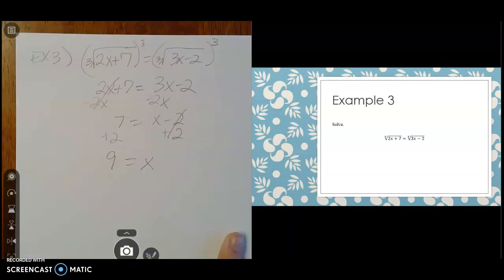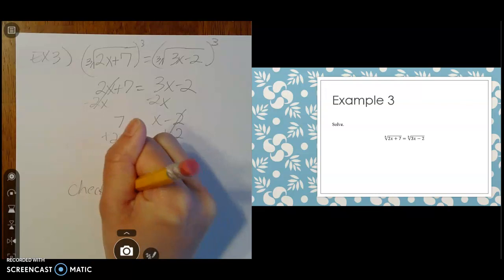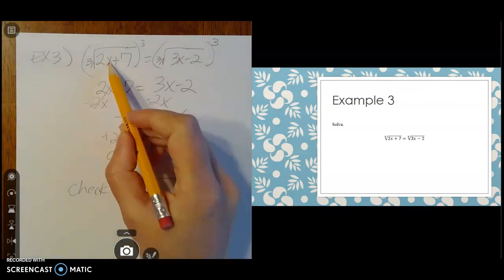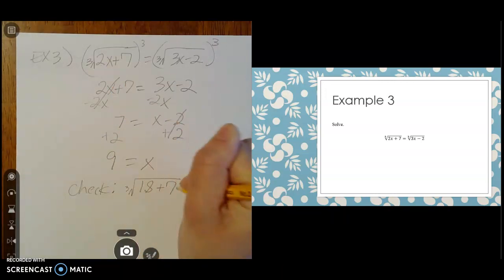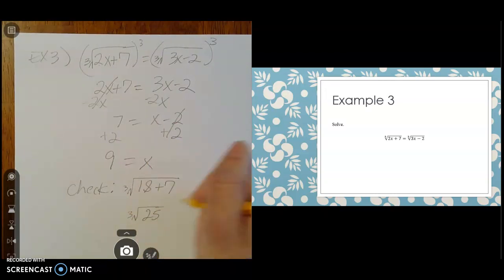Like everything else we've done today, we should check our answer and make sure it works. Let's see, the cube root of 2x plus 7. I do 2 times 9, which is 18, then add 7 to it, giving me the cube root of 25 on this side.